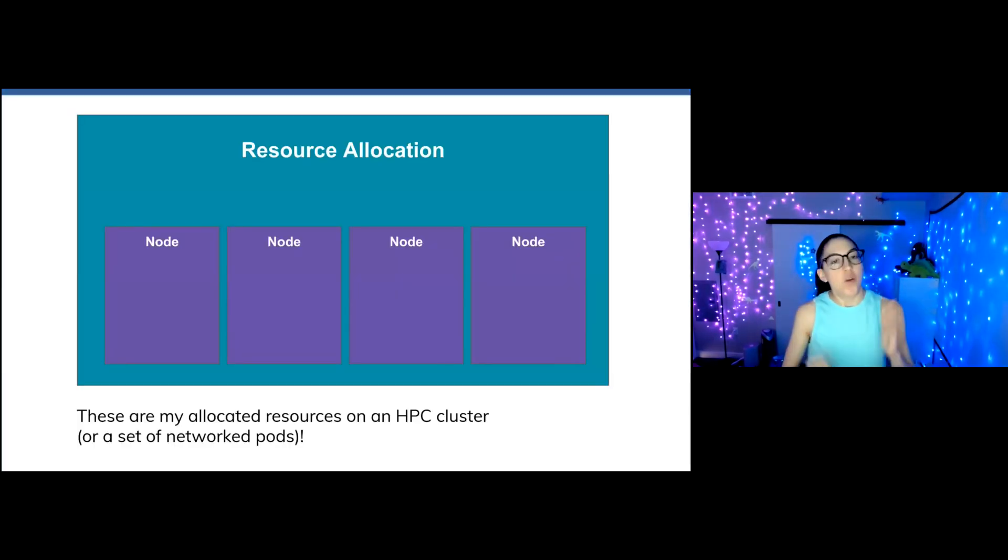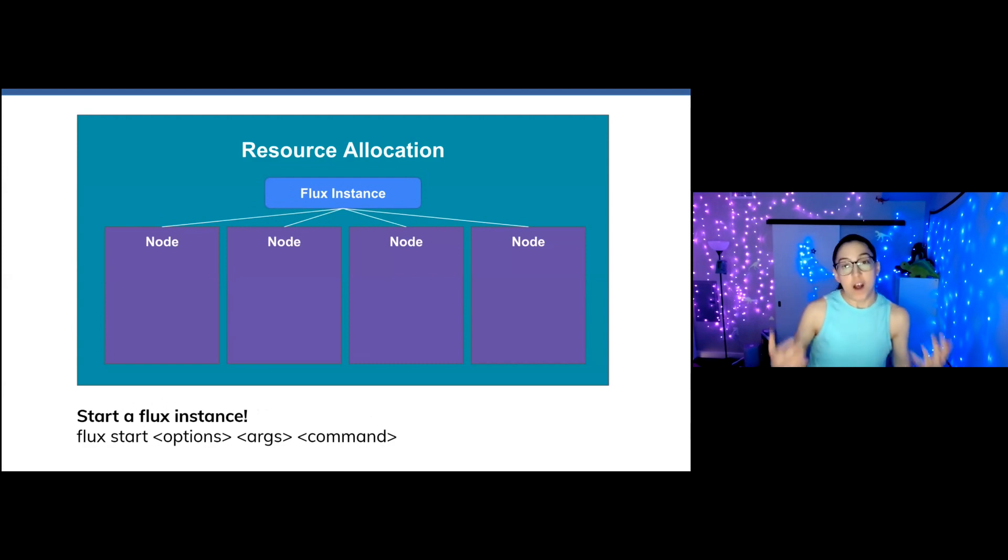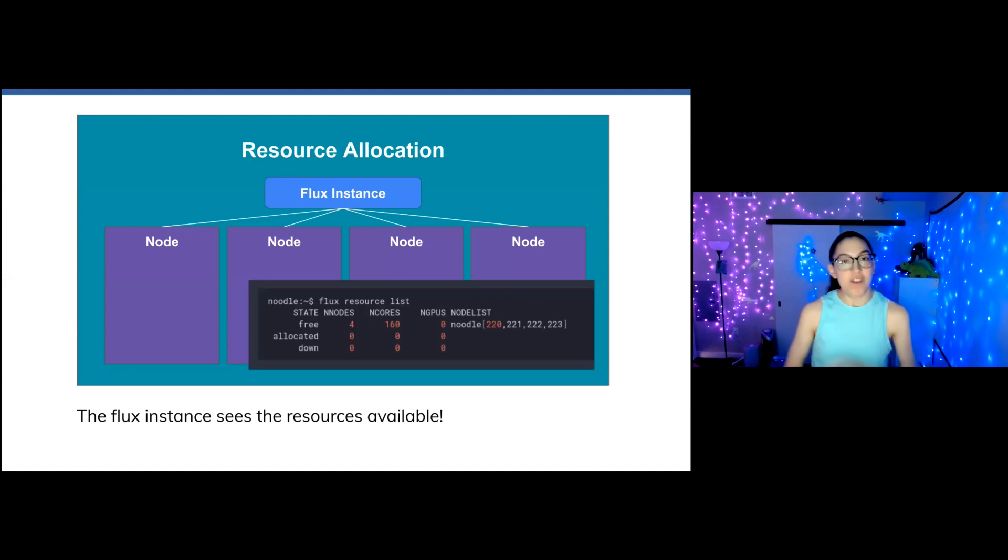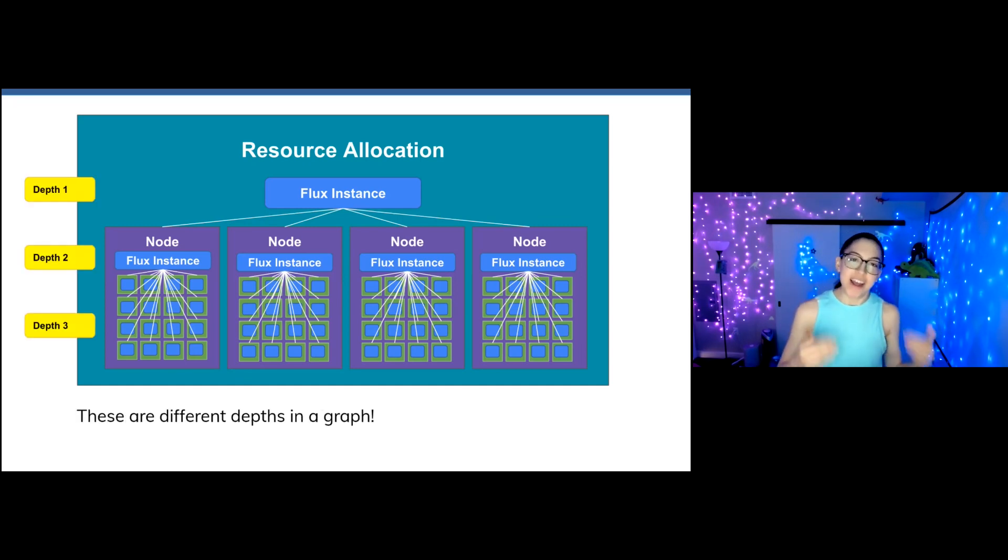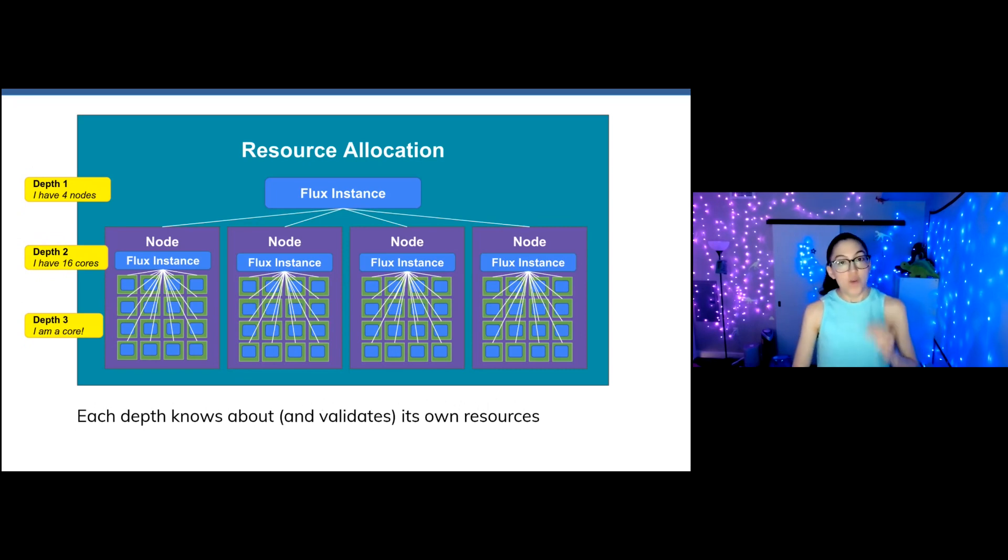That is a good question. Let's say that we have a resource allocation with four nodes. Doesn't matter if this is on HPC or on a Kubernetes cluster. We could theoretically install Flux and start what's called a Flux instance. Now the Flux instance can actually see the resources that are available to it. And then if we were to create a job, launch a job, the really cool part is that Flux is going to create instances of itself to run on the sub-resources. And if you're looking at this and you're like, this looks a little bit graph-y, you are totally right. We're looking at different depths of a graph where each depth knows about and validates its own resources.